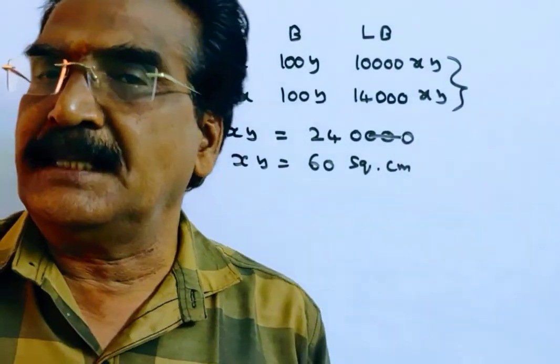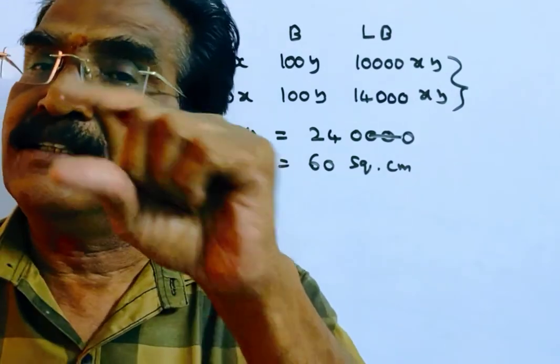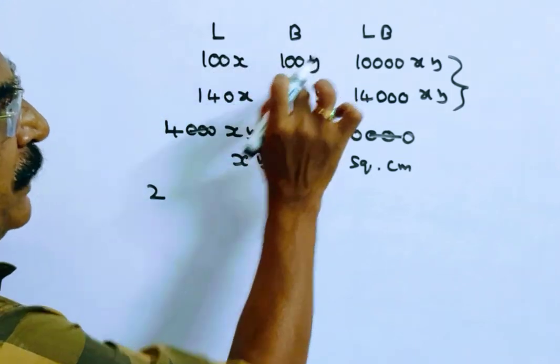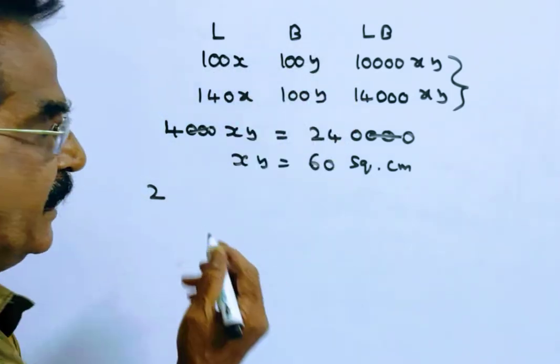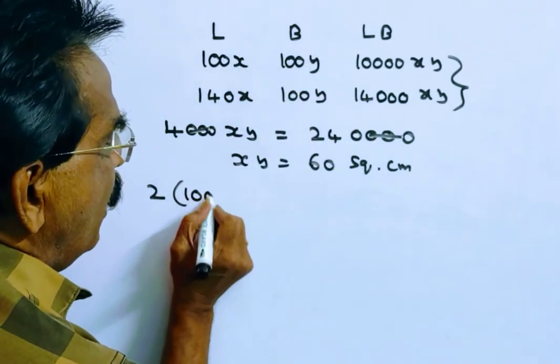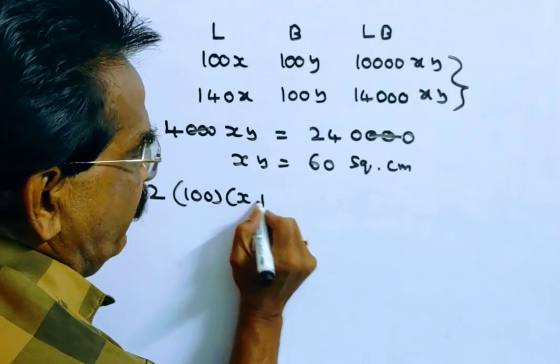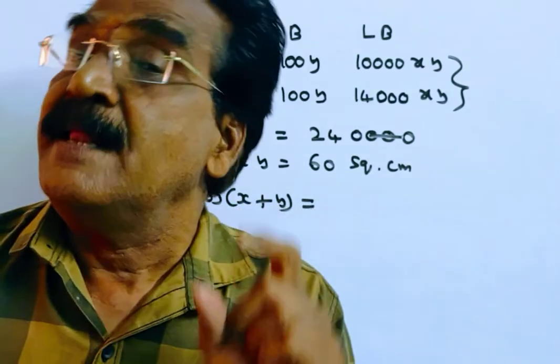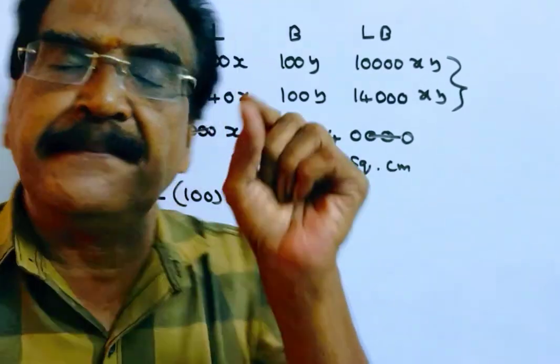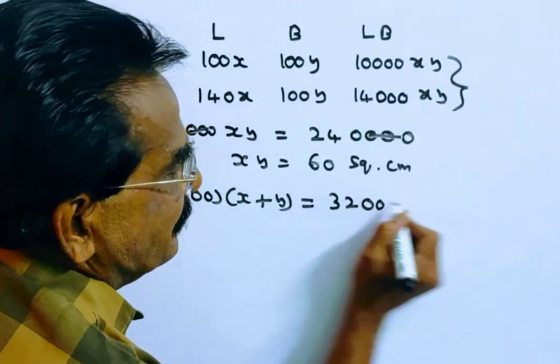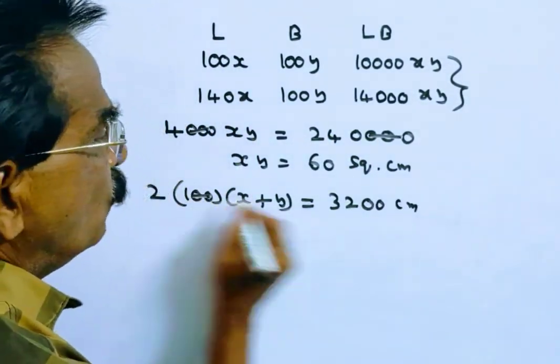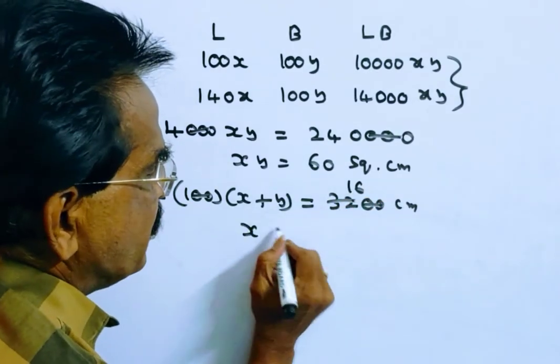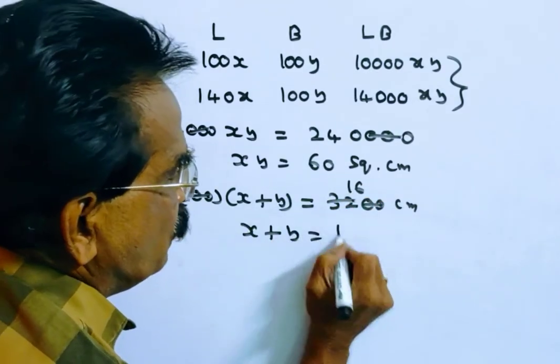It is also given that the perimeter is 32 meters. x plus y is equal to 16.